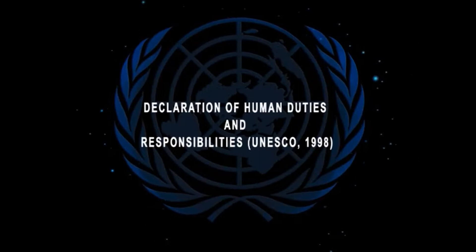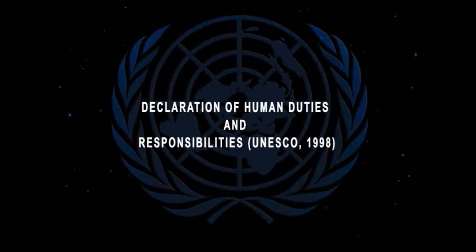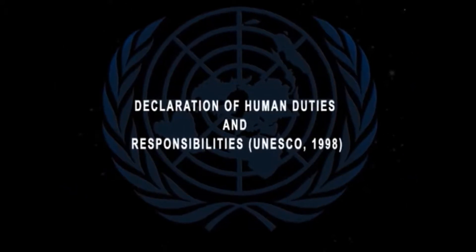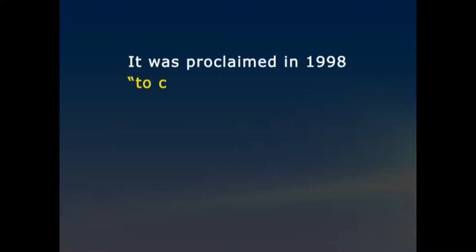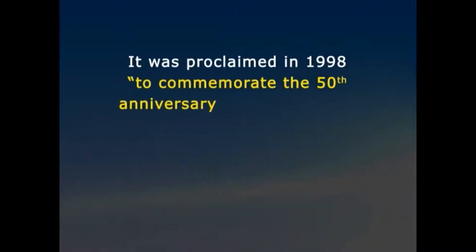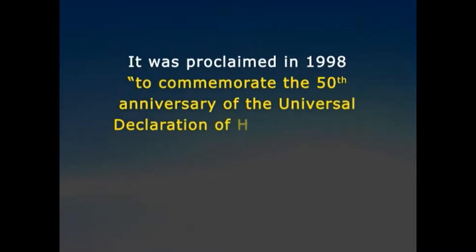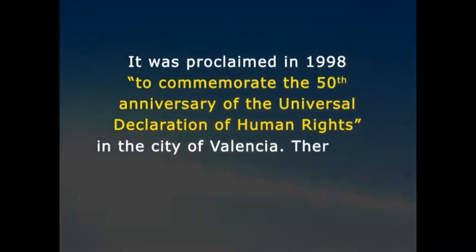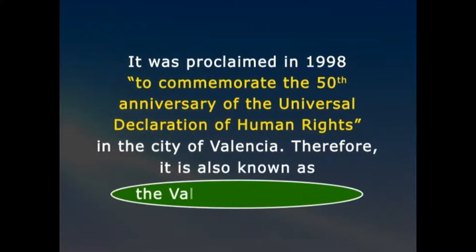Declaration of Human Duties and Responsibilities, UNESCO 1998. The Declaration of Human Duties and Responsibilities, DHDR, was written to reinforce the implementation of human rights under the auspices of the United Nations Educational, Scientific, and Cultural Organization, UNESCO. It was proclaimed in 1998 to commemorate the 50th anniversary of the Universal Declaration of Human Rights in the city of Valencia. Therefore, it is also known as the Valencia Declaration.